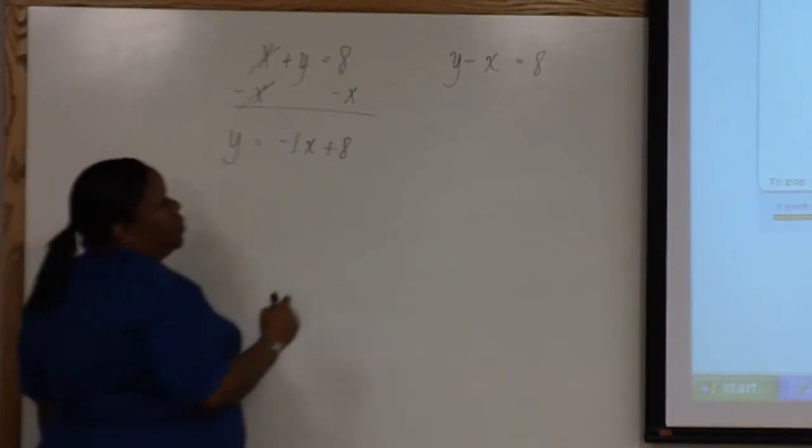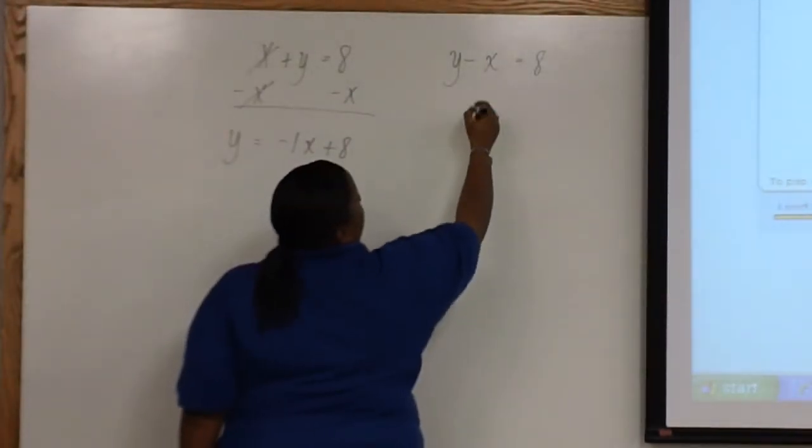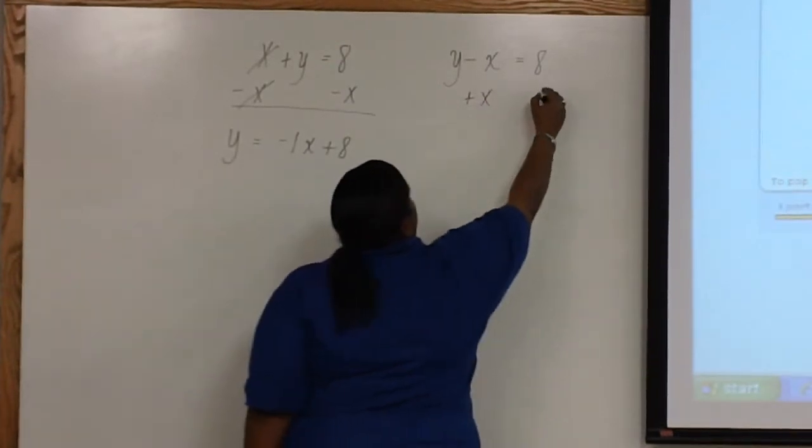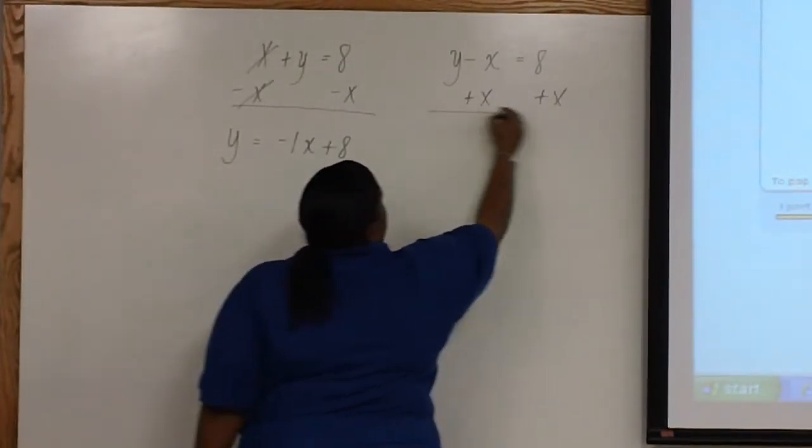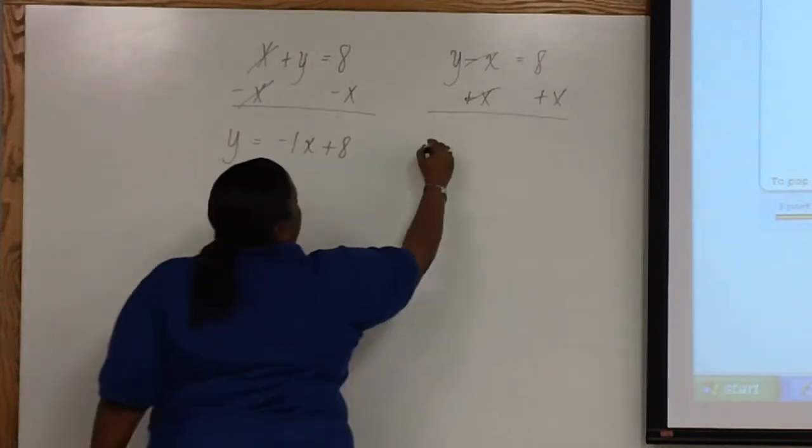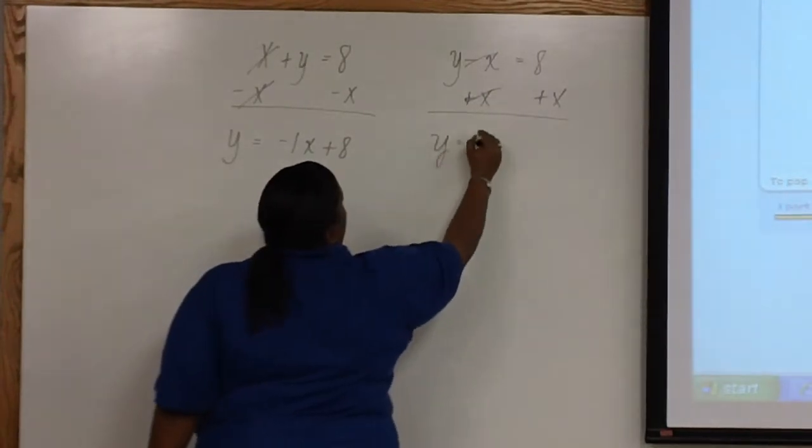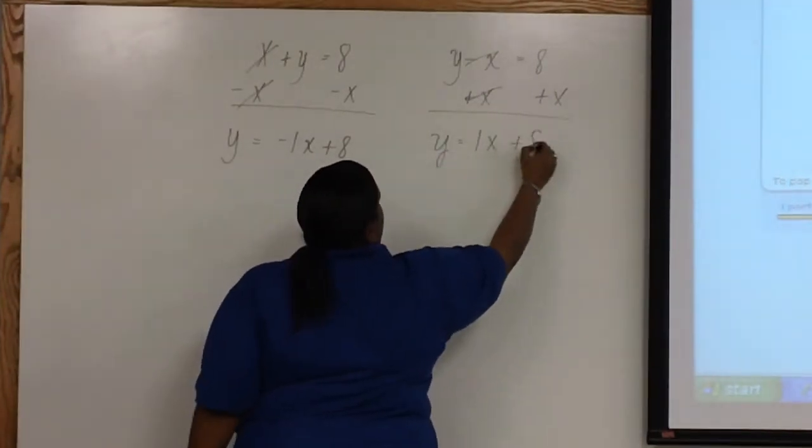In the second equation, to solve it for y, we just need to add x to both sides of the equation. Now we have y equals 1x plus 8.